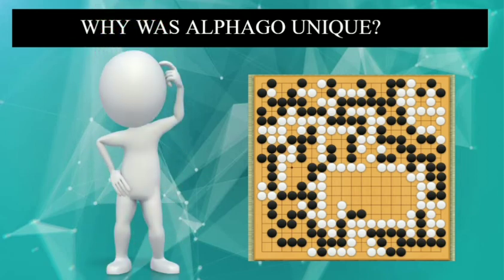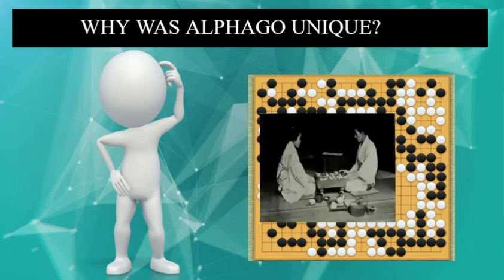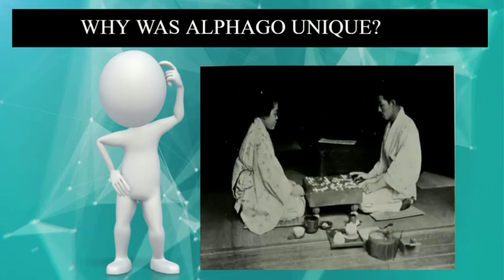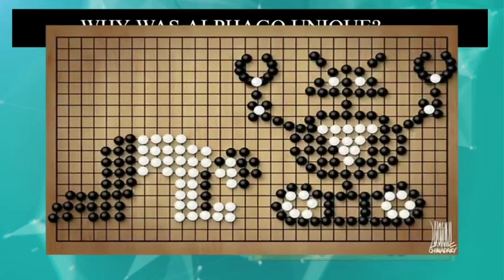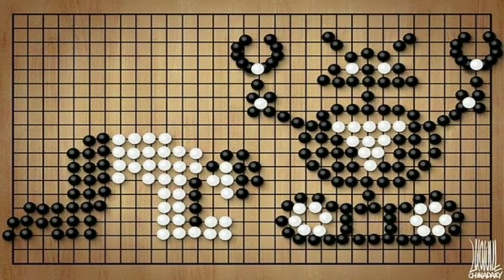Second, it had no expressions. A player can read the opponent's expressions and predict the next possible moves or even manipulate them accordingly — but in this case it was not possible, as AlphaGo had no expressions. Third is winning by small margins — AlphaGo won one of its games by a margin of 1.5 points. Throughout the game it kept playing strangely, but at last all those things added up. According to AlphaGo, no matter how small the margin, a win is a win.